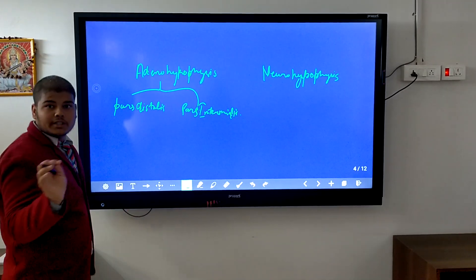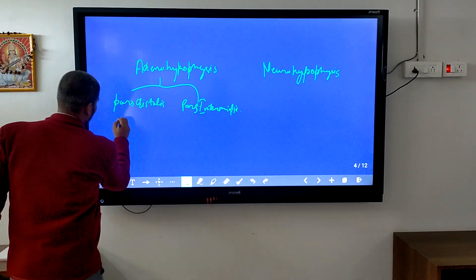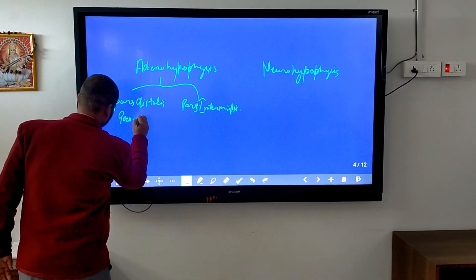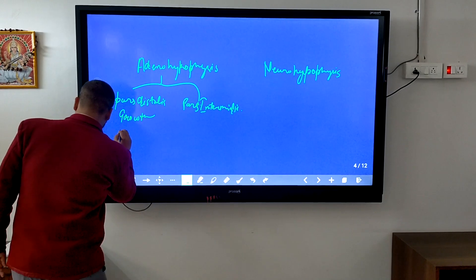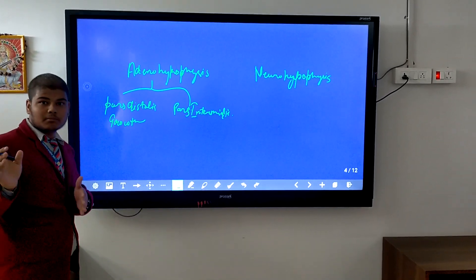Pars distalis secretes five hormones. First is growth hormone, and the second one is prolactin.